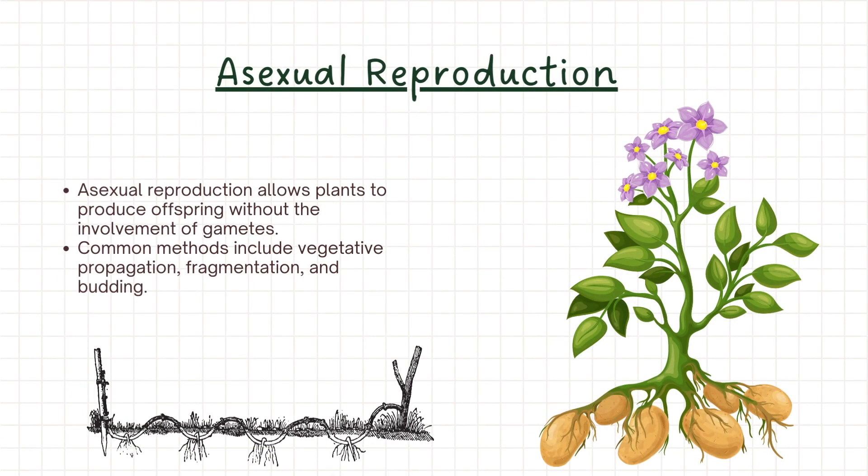In addition to sexual reproduction, plants have evolved various methods of asexual reproduction, allowing them to produce offspring without the involvement of gametes. Methods such as vegetative propagation, fragmentation, and budding enable plants to reproduce efficiently and rapidly, but with limited genetic diversity.